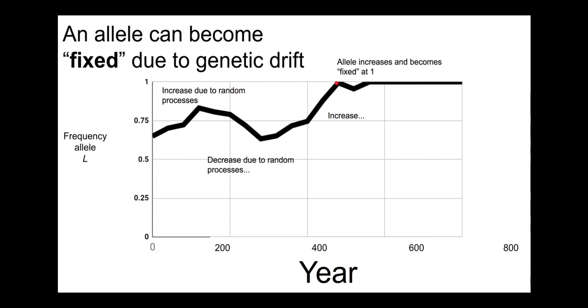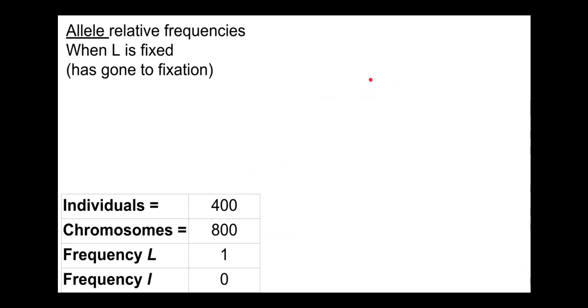One thing here, it looks like the line touched one momentarily here and then drifted back down. If you see this, that means it was only temporarily fixed, and something drove it away from one and then it fixed again. It could also just be a rounding error, could be an immigrant came into the population and brought the little l allele back, could be a mutation brought it back. Then we go back up to fixation.